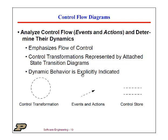Dynamic behavior is explicitly indicated in these diagrams. Events and actions now look as dotted arrows, showing the flow of events and actions — just like we saw data flow through a data flow diagram. You can also have control stores, where you can store events and actions, or at least a record of their appearance.